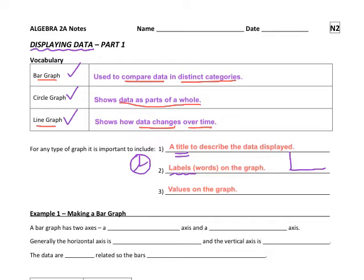And then we also want to include values on the graph. So whether that's the numbers going across this way or whether it's a percentage or a total number in each section of a circle graph, you want to just make sure that you have labels and values as well as a title on each type of graph that you create.